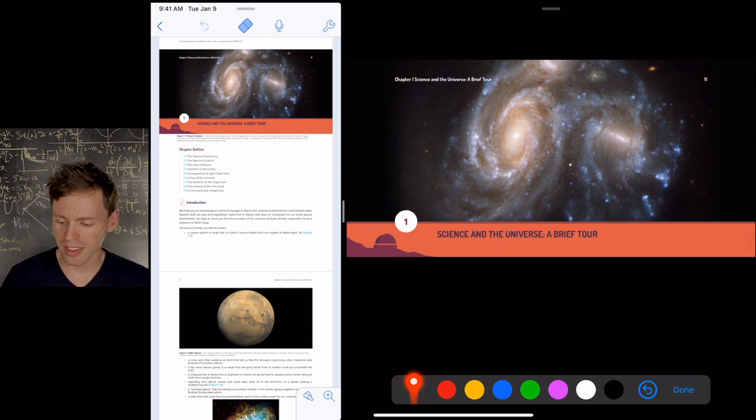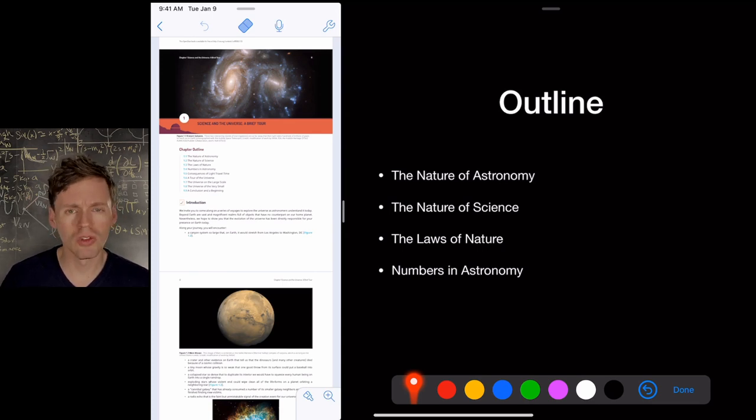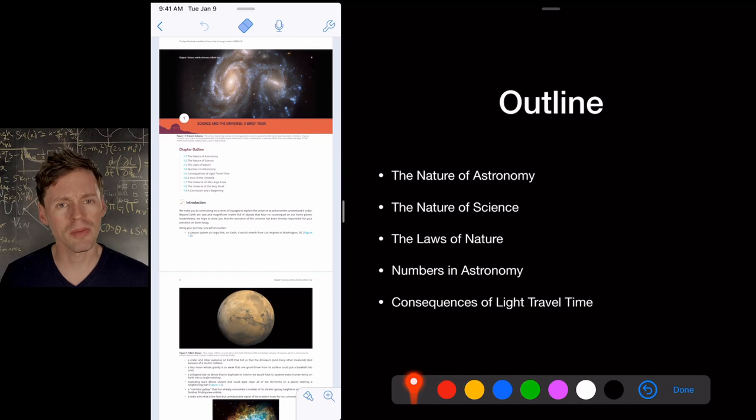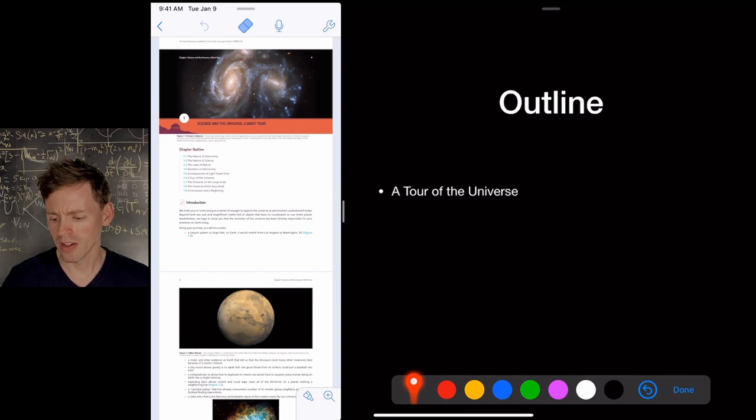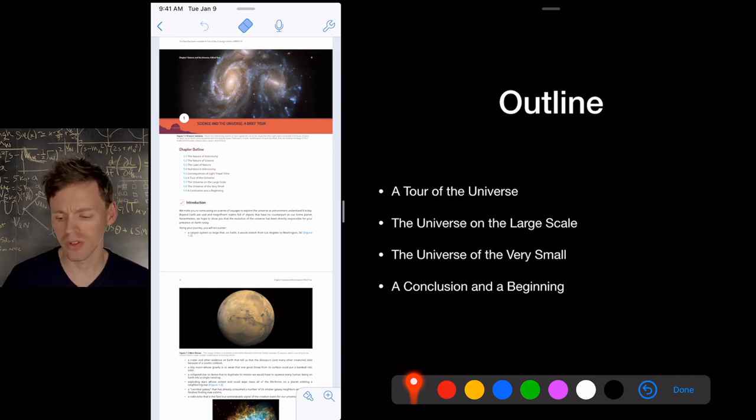So chapter one is a brief tour of everything we're going to talk about. It starts out talking about the nature of astronomy, then the nature of science, the laws of nature, the numbers that we're going to use in astronomy, consequences of light travel time. It turns out the speed of light is constant, and there's some interesting things that result from that. And then we'll give a tour of the universe, discuss the universe at the largest scales, and then the universe at the smallest scales, and then give you kind of a broad history of the universe.